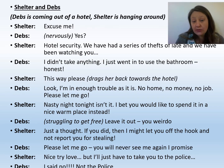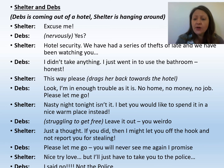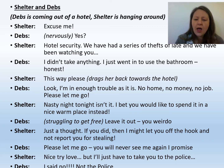Here is another script between Shelter and Deb's. Deb's is coming out of a hotel and Shelter is hanging around. Shelter: "Excuse me?" Deb's: "Yes?" Shelter: "Hotel security. We've had a series of thefts of late and we have been watching you." Deb's: "I didn't take anything. I just went to use the bathroom. Honest." Shelter: "This way, please." He drags her back to the hotel. Deb's: "Look, I'm in enough trouble as it is. No home, no money, no job. Please let me go." Shelter: "Nasty night tonight, isn't it? I bet you would like to spend it in a nice warm place instead." Deb's, struggling to get free: "Leave it out, weirdo." Shelter: "Just a thought. If you did, then I might let you off the hook and not report you for stealing." Deb's: "Please let me go. You'll never see me again." Shelter: "Nice try, love. But I'll just have to take you to the police myself." Deb's: "No — not the police."